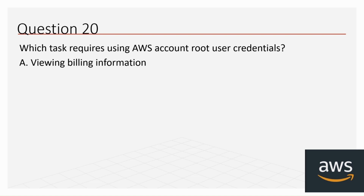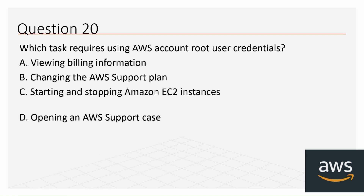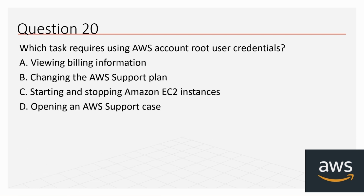Question 20: Which task requires using AWS account root user credentials? The options are: A) Viewing billing information, B) Changing the AWS support plan, C) Starting and stopping Amazon EC2 instances, and D) Opening an AWS support case. The correct answer is B, changing the AWS support plan.